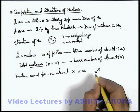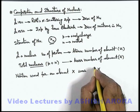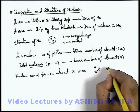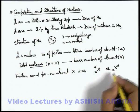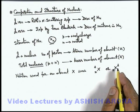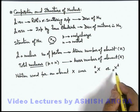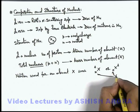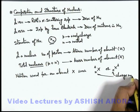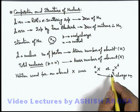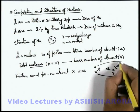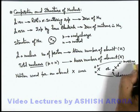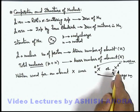In the notation for an element X, we write in subscript the atomic number Z, which gives us the number of protons, and in superscript on the left or right side of the symbol, the mass number A. So an element with its nucleon quantity is represented as Z-X-A. Z is also called the charge number because it gives us the total amount of positive charge particles within the nucleus, and A gives us the total number of particles within the nucleus.